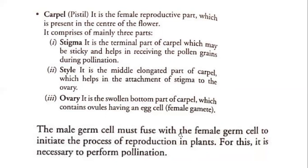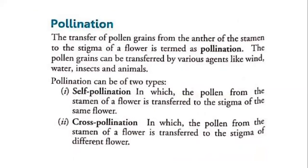The male germ cell must fuse with the female germ cell to initiate the process of reproduction in plants. For this, it is necessary to perform pollination. Pollination we have learned in detail in Standard 8. The transfer of pollen grains from the anther of the stamen to the stigma of a flower is termed as pollination. Pollen grains can be transferred by various agents like wind, water, insects, and animals.